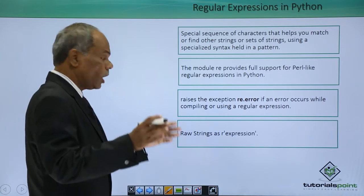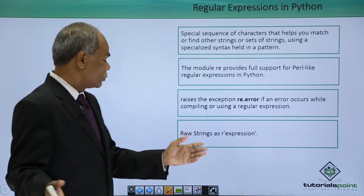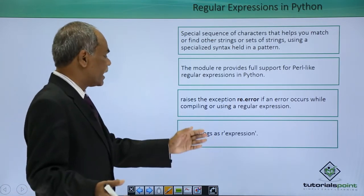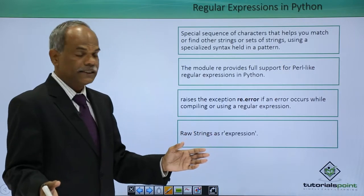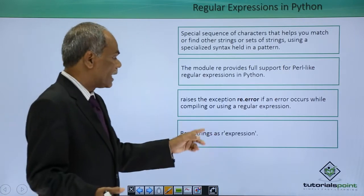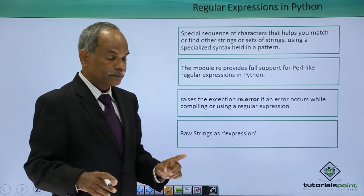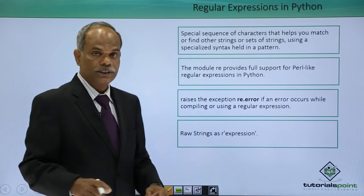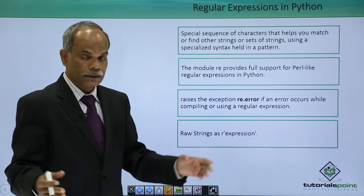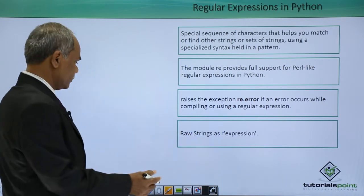The raw strings — we have come to this earlier also. Raw strings are created as R followed by an expression. This is how the raw string expression is created.